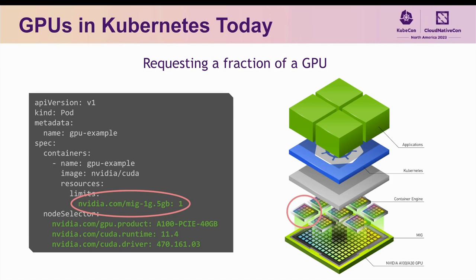You also have the ability to request a fraction of a GPU through a technology called multi-instance GPUs, or MIG for short. In the example shown here, we're requesting a MIG device that is one-eighth the size of a full A100 GPU using the canonical naming convention of MIG-1G.5GB.